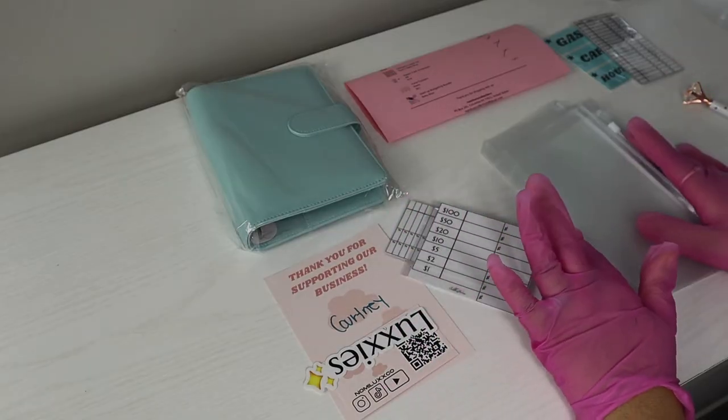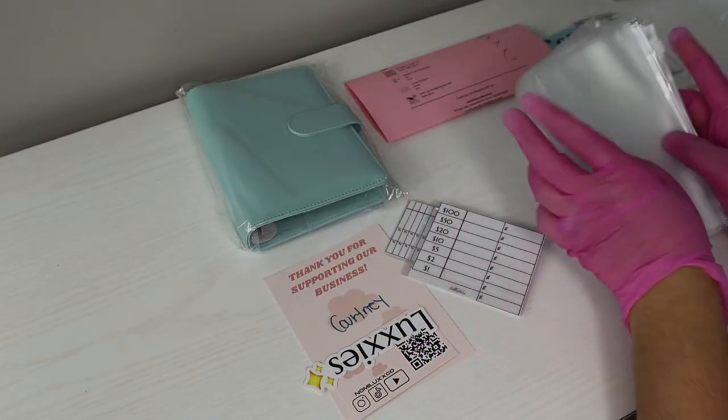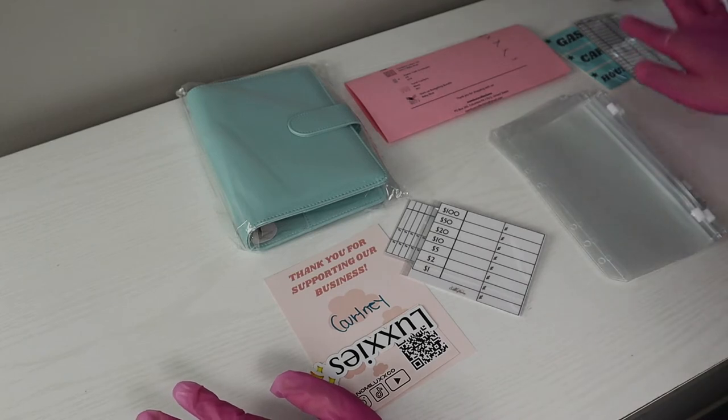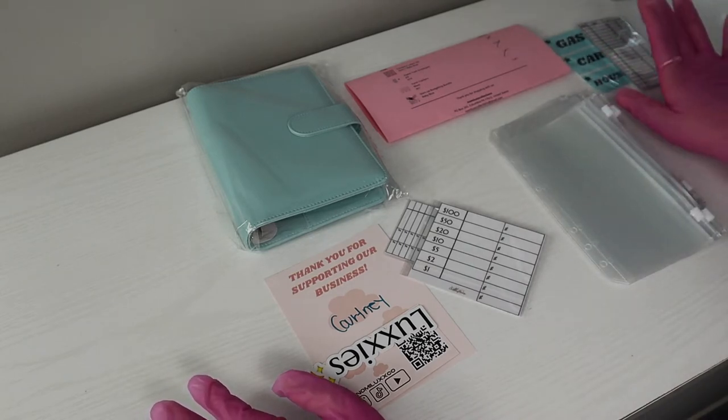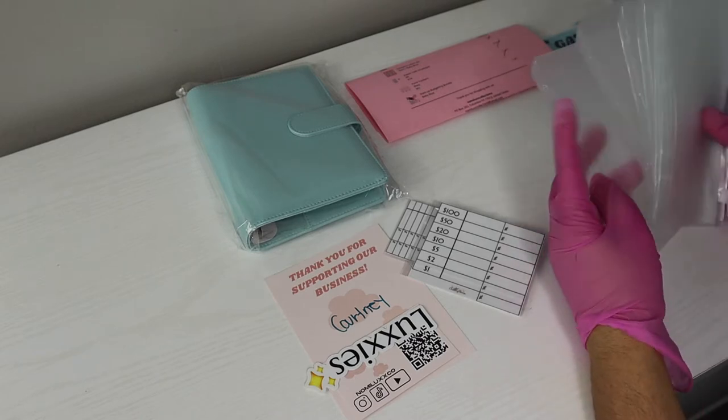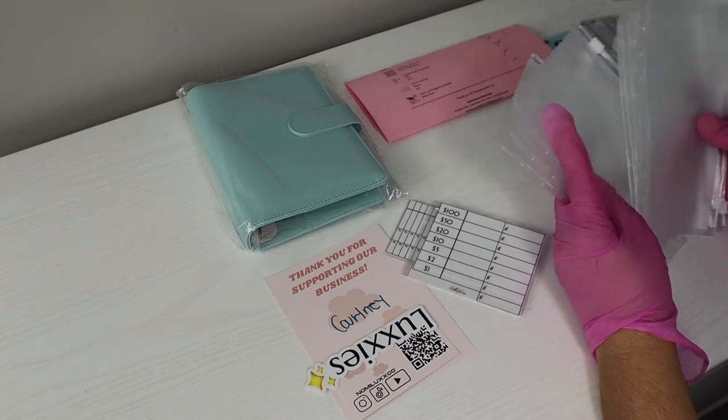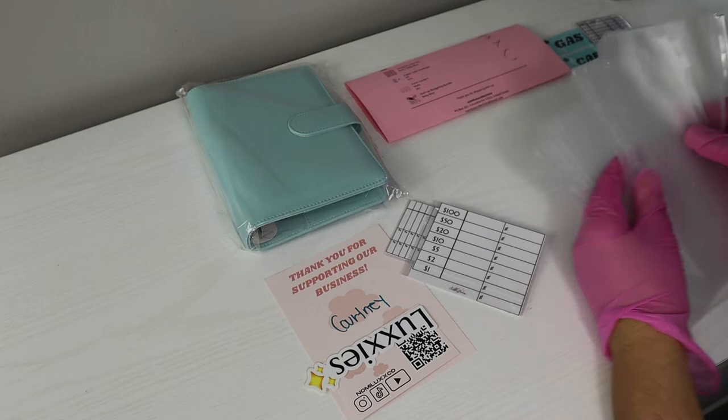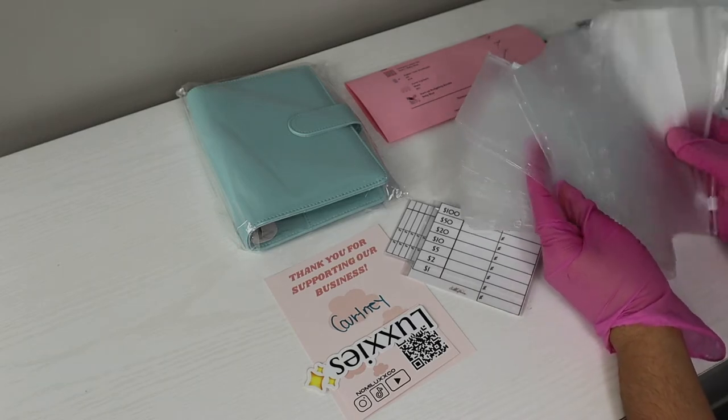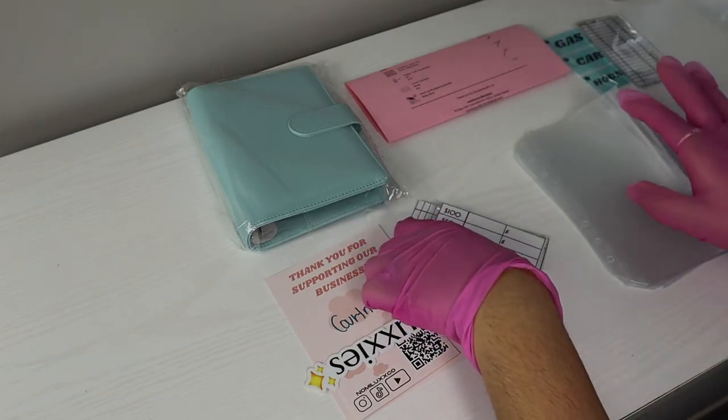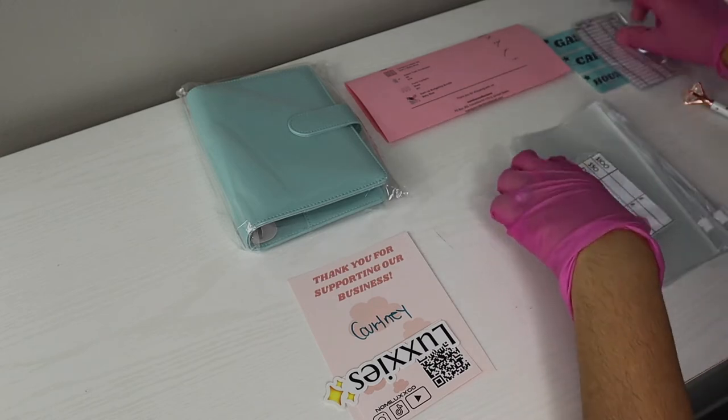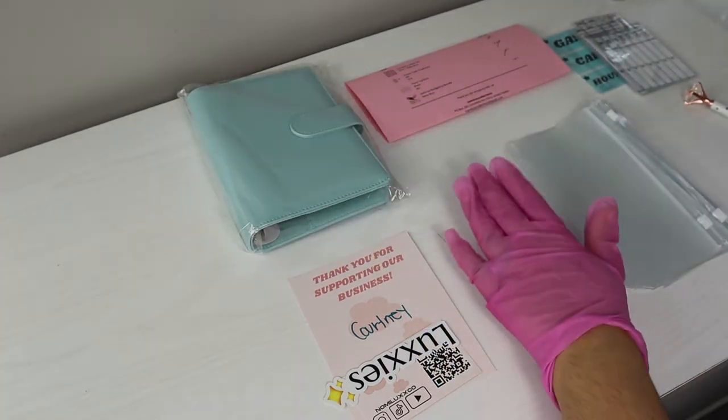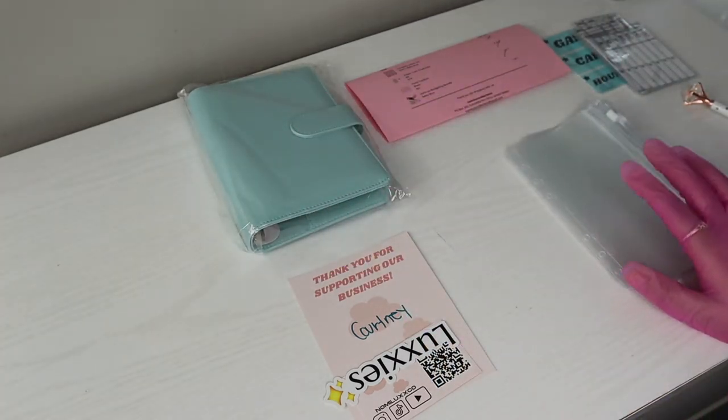Alright guys, sorry, my camera died. I don't know where I was left, but I am packing Kourtney's order. Kourtney got the category labels in blue with the star, a fund tracker, six A6 envelopes. Then the startup budgeting bundle brings another four, along with the bank teller slip, another fund tracker, and the binder. So I'm going to go ahead and take all the holes out of these, and then I'll be right back.